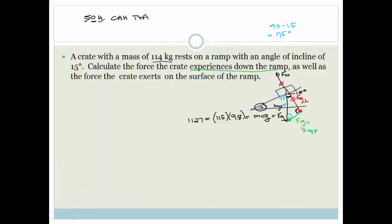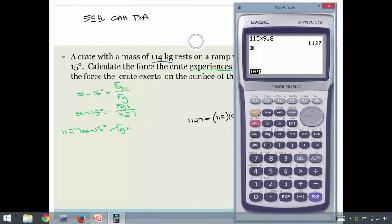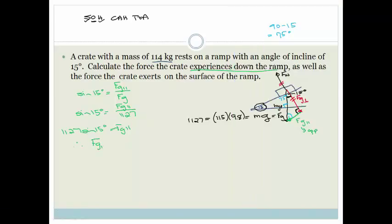We can say sine of 15 degrees is equal to the opposite, which is Fg parallel, over the hypotenuse, which is Fg. So sine of 15 degrees is Fg parallel over 1127. Then we can rearrange and say 1127 sine of 15 degrees equals Fg parallel. We can get out our calculator and go 1127 times sine of 15 degrees, and that gives you 291.689, which gets rounded up to 291.69. Therefore, Fg parallel is 291.69 Newtons.